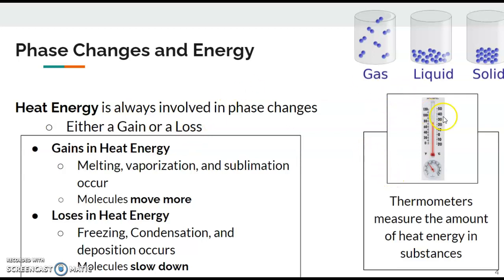We can measure that heat energy gain and loss through something like a thermometer, which measures the amount of heat energy in a substance. Like if we have boiling water, we can throw a thermometer in it and we can read the amount of energy or the temperature in a substance like water.